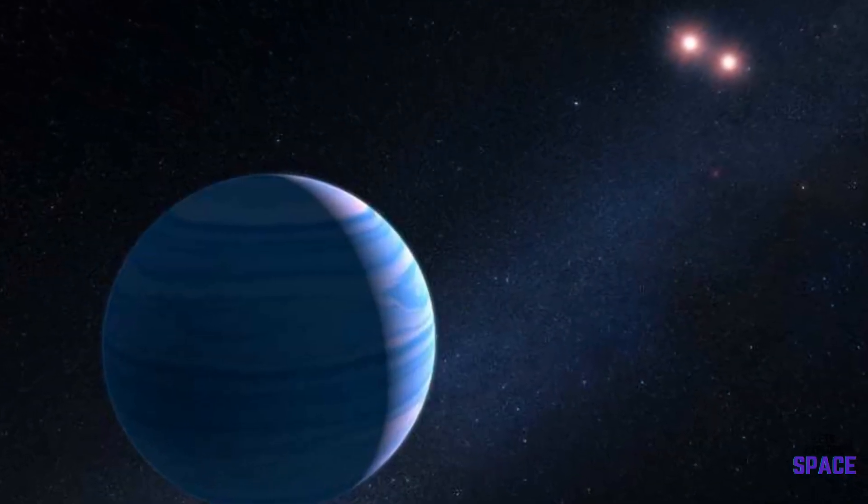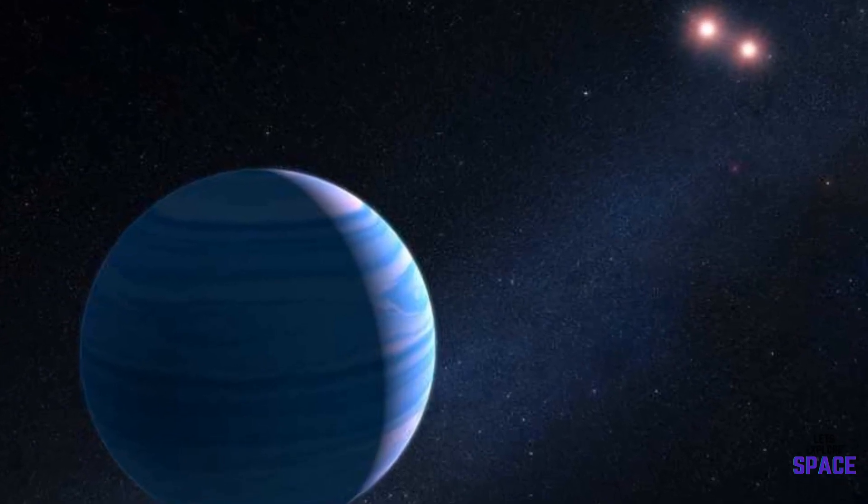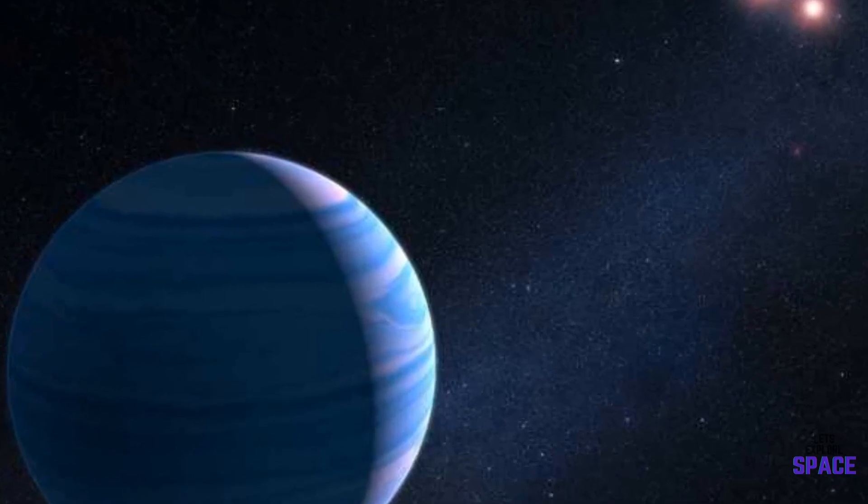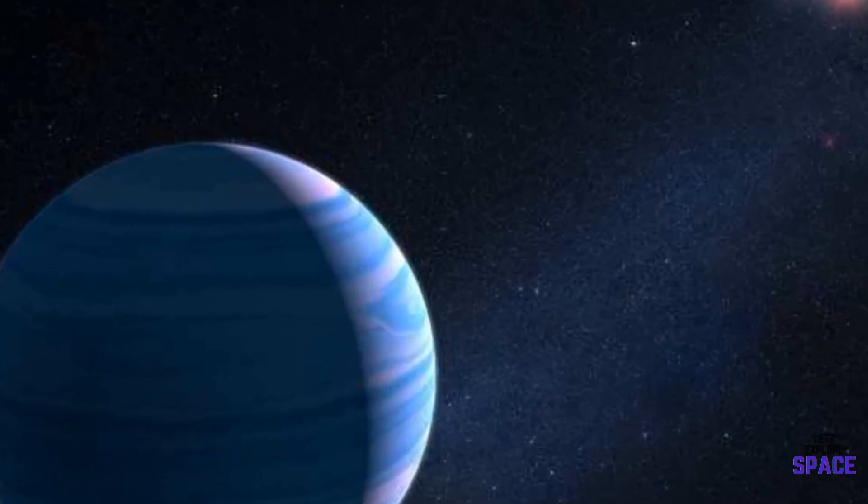One planet named Draugr, which orbits a neutron star along with planets Poltergeist and Fulbador, is the smallest exoplanet discovered to date, with the mass of only two times that of our moon.